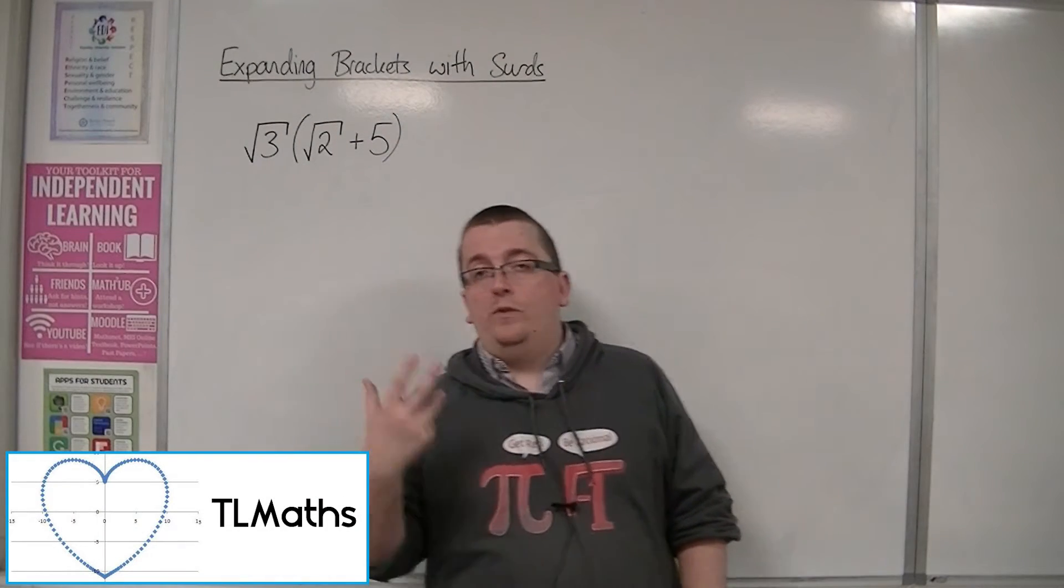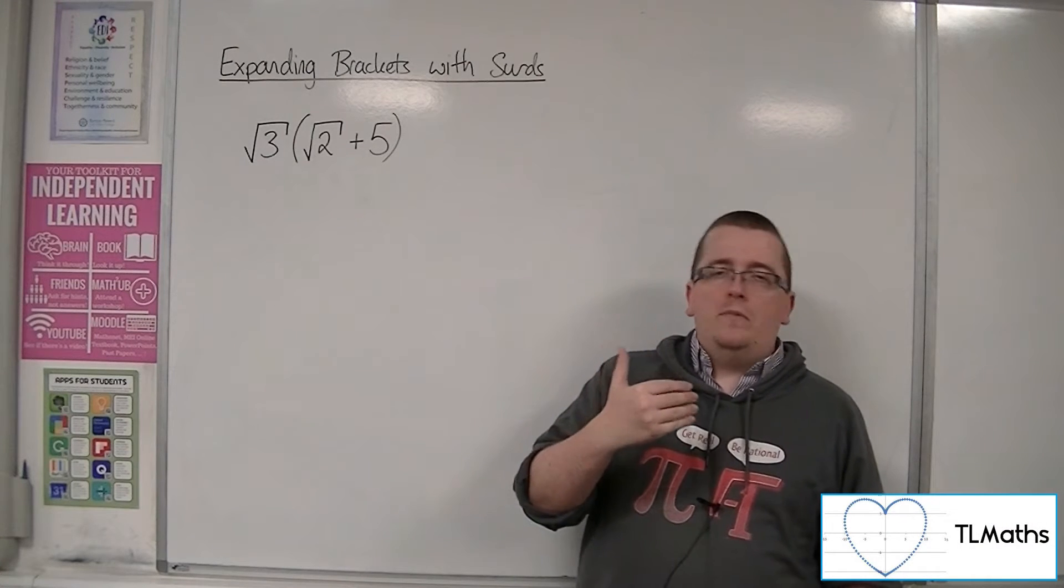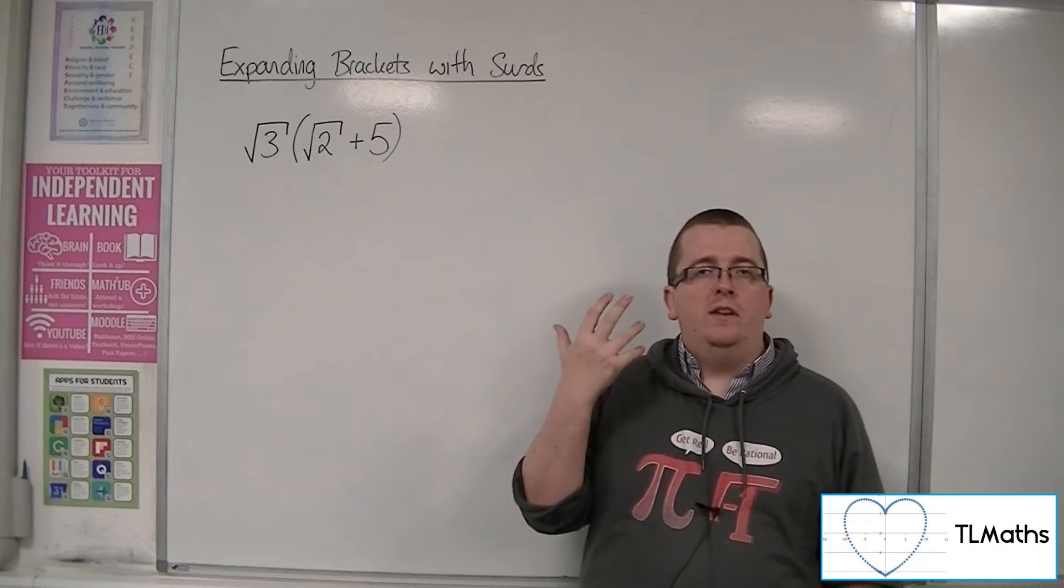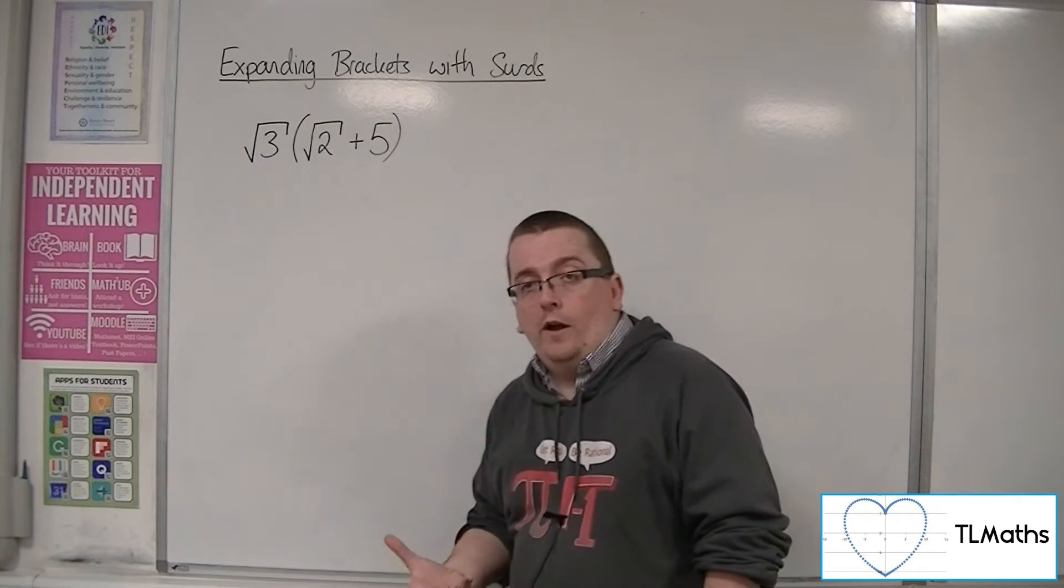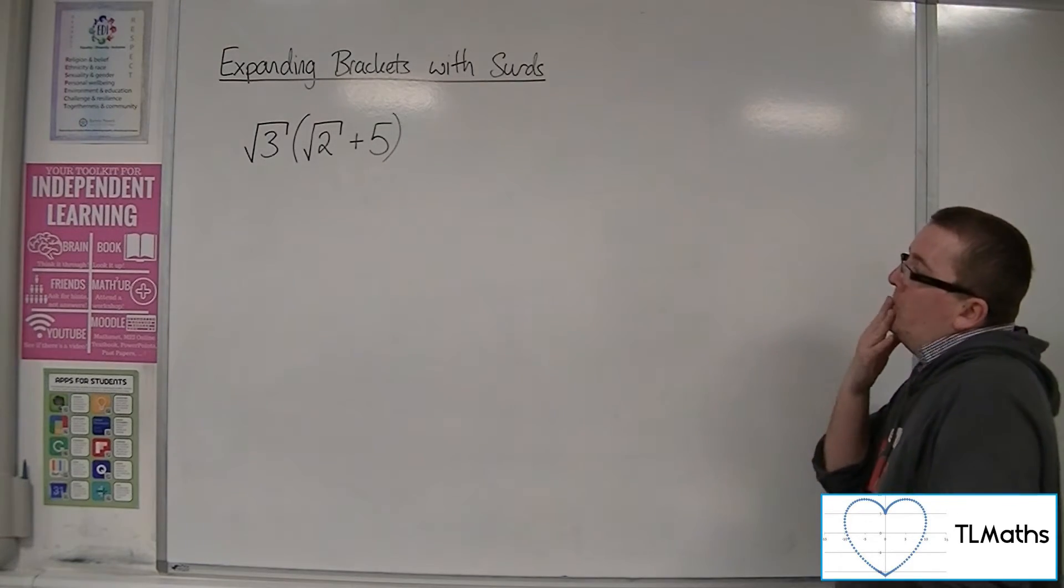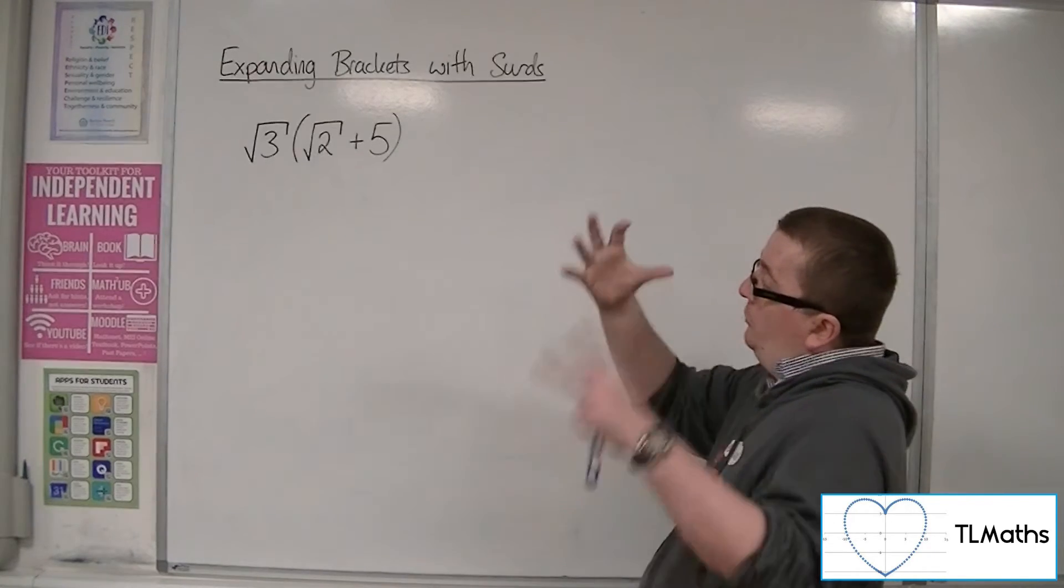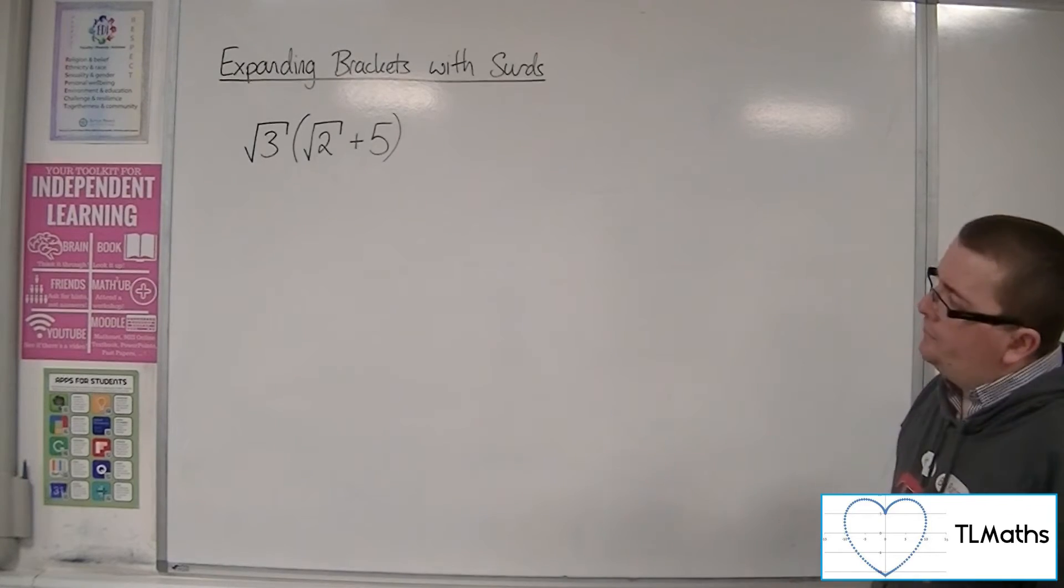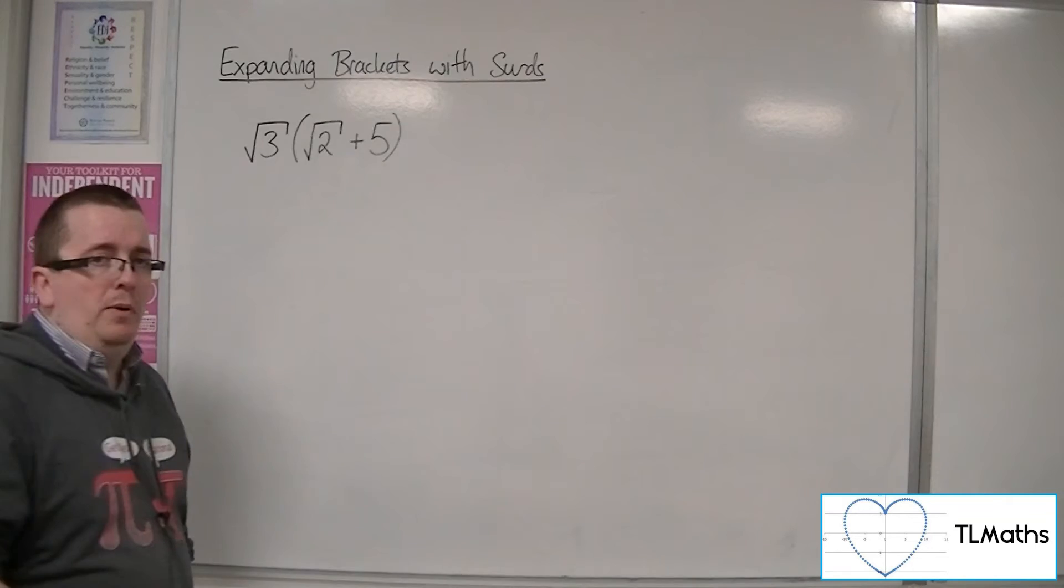Expanding brackets with surds involved. You can use any of the methods that you've learned before to do it, as long as it works. So if I need to expand this bracket out, root 3 times root 2 plus 5, then if you want to draw it out in a grid, that's perfectly fine.